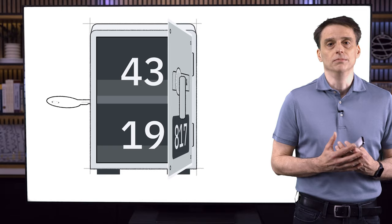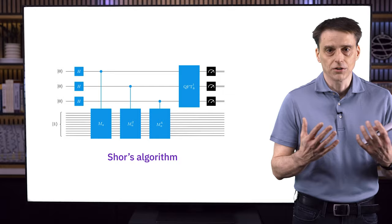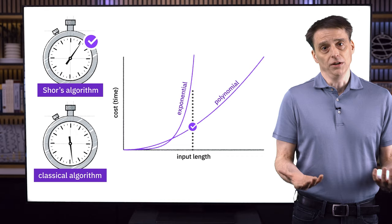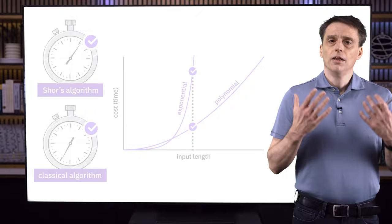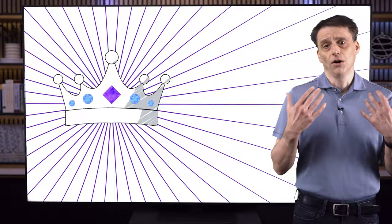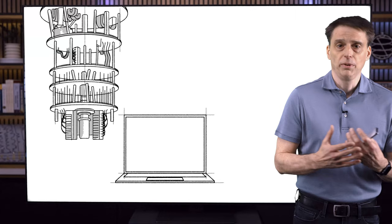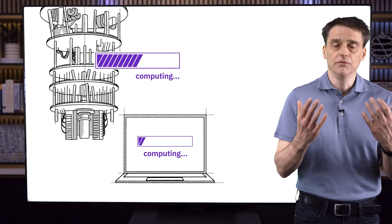What we'll obtain is Shor's algorithm, which allows integers to be factorized at polynomial cost, or in polynomial time if we prefer to think in terms of the time required rather than the number of elementary operations we need. This is the crown jewel of quantum algorithms in some sense, and while factorizing large integers may have limited utility for most people, it remains one of the most compelling pieces of evidence that quantum computers will offer striking advantages over classical computers.